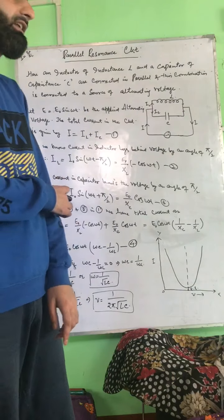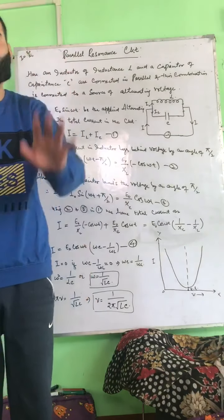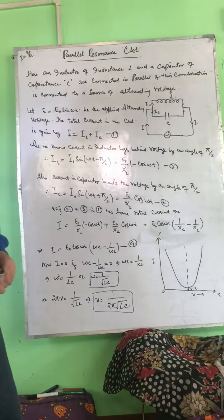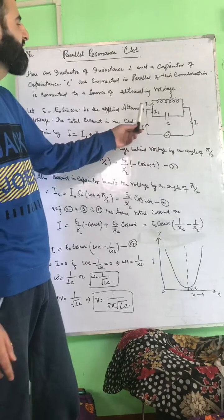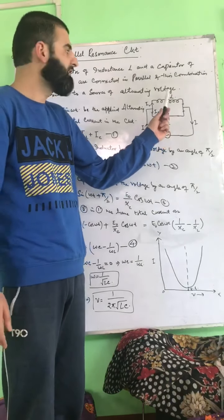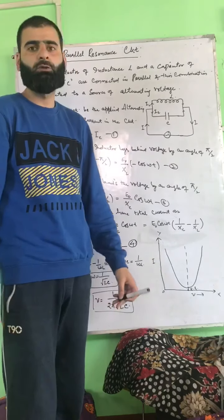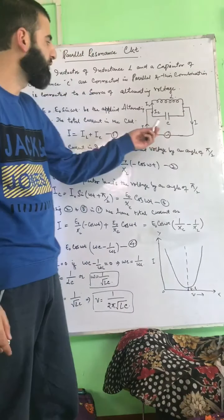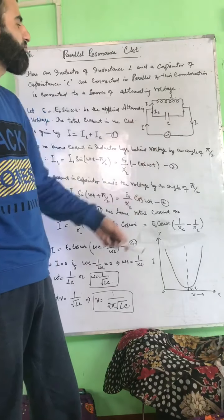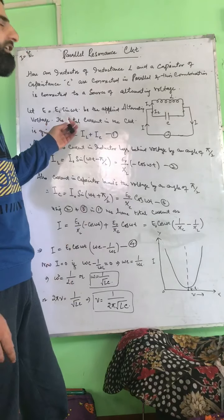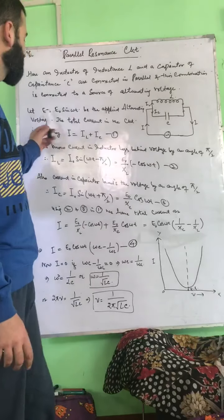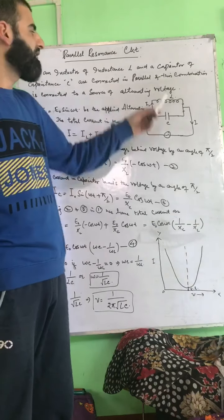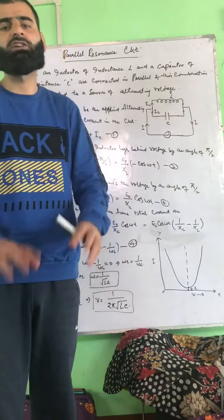So here we have to study the parallel resonant circuit. We are considering an inductor of inductance L and a capacitor of capacitance C connected in parallel with each other, and this whole combination is connected with an alternating voltage source providing voltage of the type E = E₀ sin(ωt).